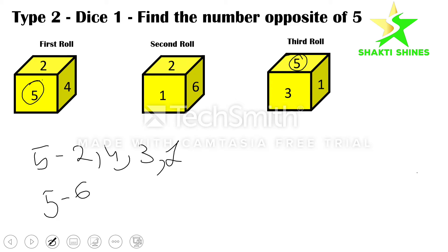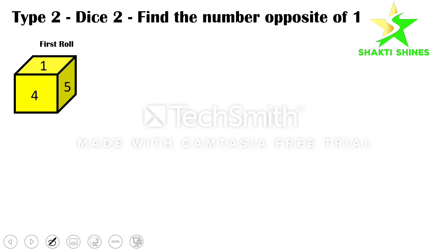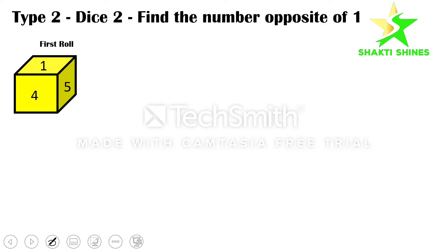Let's check the answer — yes, it's correct! Now let's go to the next question. Here they're asking the opposite of one. Let's check the dice. In the first roll it's showing one, four, five. In the second roll it's showing one, two, three.